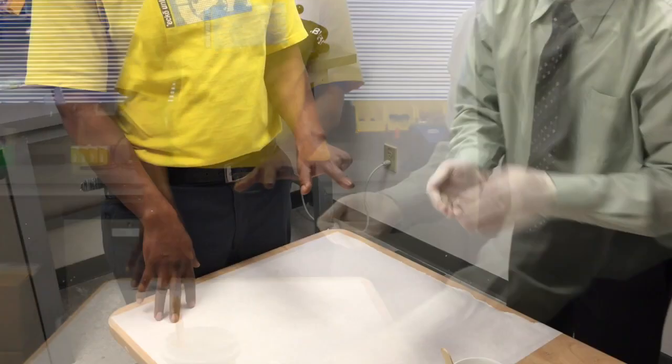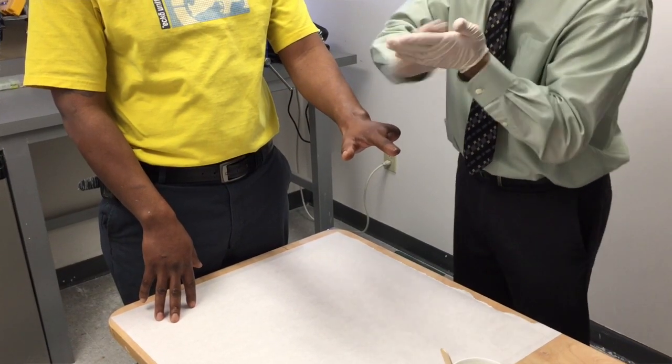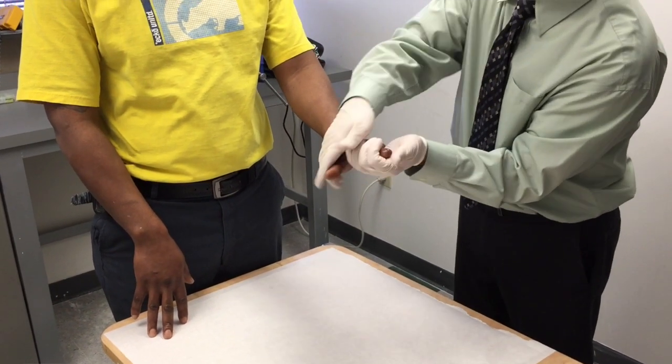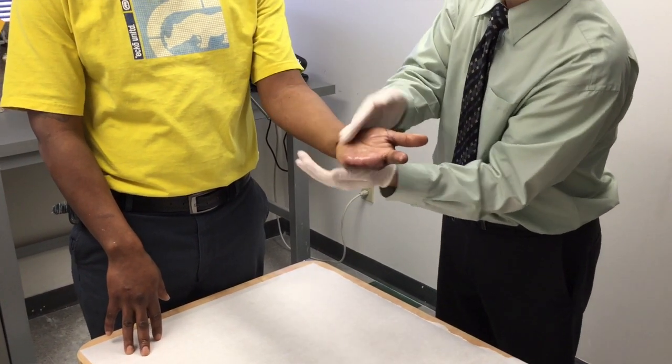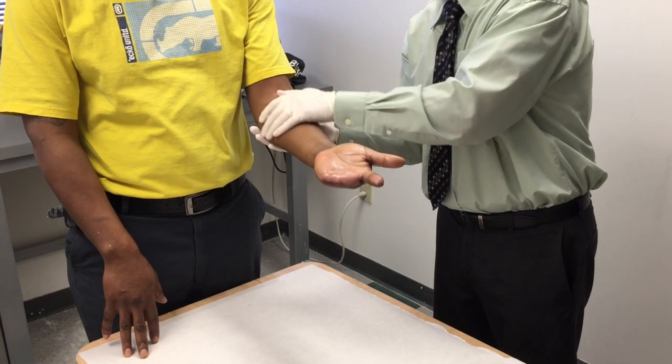Then, using Vaseline as a separator, we're going to apply that to the limb almost like you're applying lotion. It doesn't need to be very thick, just need a nice shiny sheen to the skin so that the silicone can be easily removed.